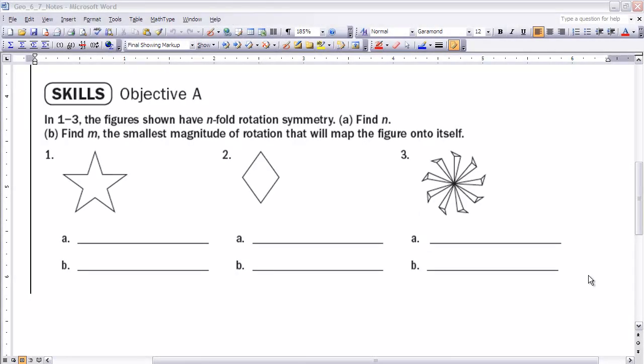To finish off, I'd like you to see if you can answer questions 1, 2, and 3 here at the end of the notes. See if you can answer part A and B: find n, and then part B is find m, the smallest magnitude of rotation that will map the figure onto itself. See if you can do those three problems, and then we'll take a look at those in class when you come back next time.